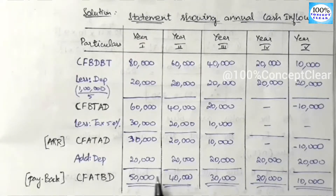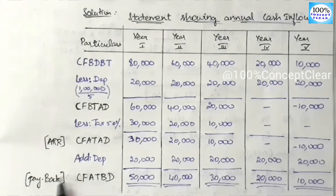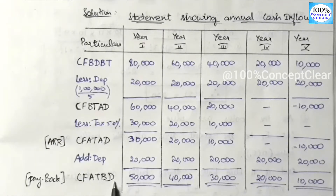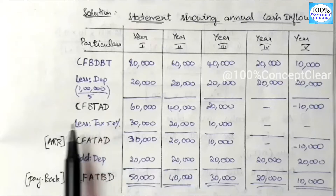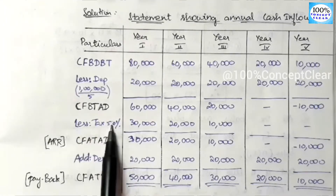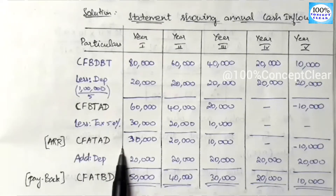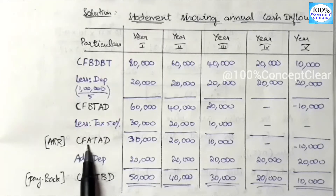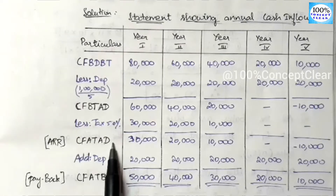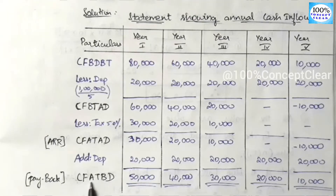Now we calculate net present value after tax and before depreciation. The question gives earnings after tax. We have cash inflows after tax and after depreciation, but we also consider cash flow after tax and before depreciation. We calculate the cash flow after tax and before depreciation value.